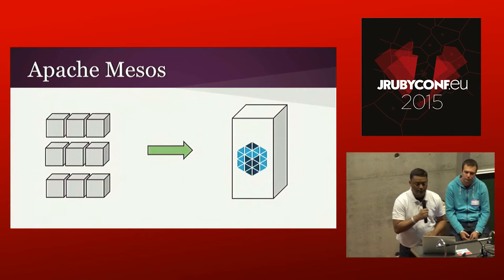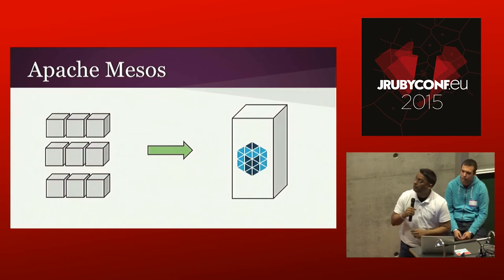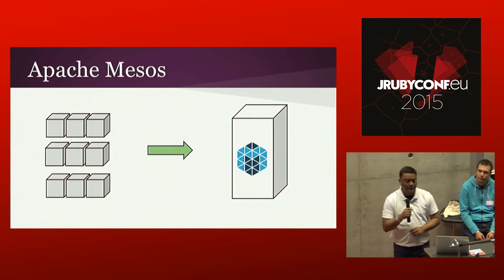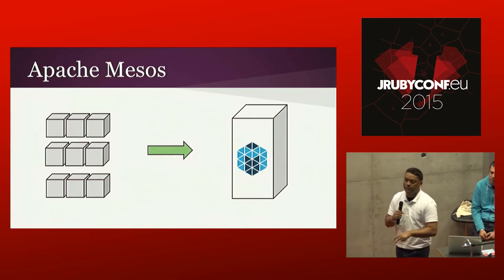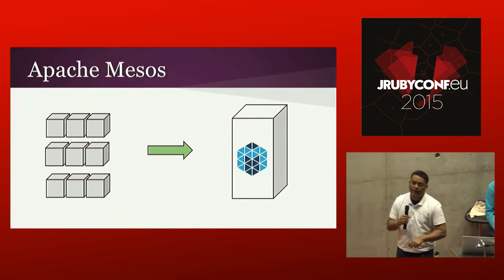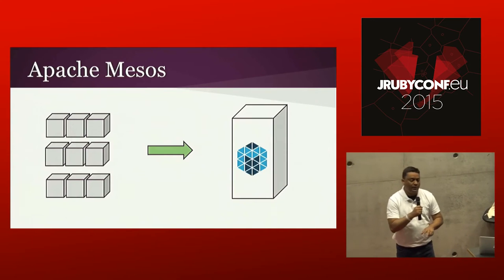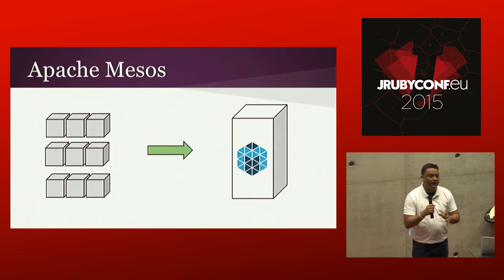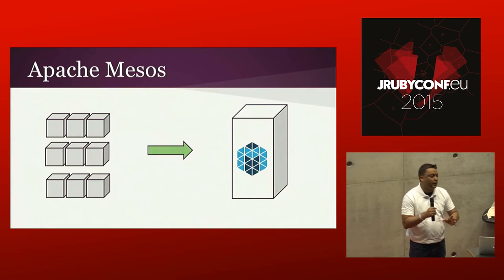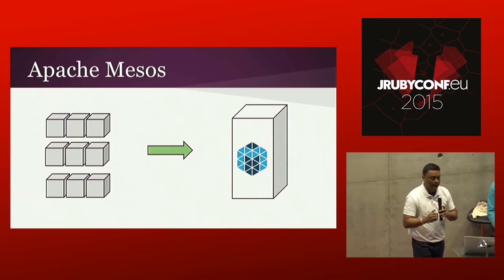Mesos takes all your servers and treats them as a single resource. So if you have eight servers with two CPUs and 2 GB RAM each, it will treat it as a single server with 16 CPUs and 16 GB RAM. That is a great abstraction for us to work with because we are good at working with single computers.